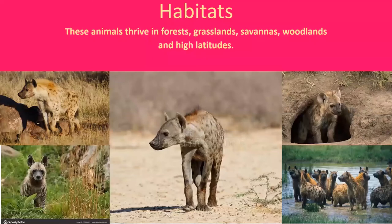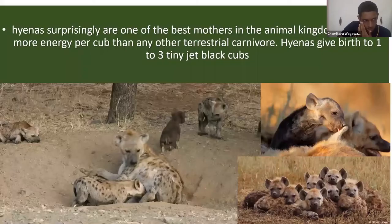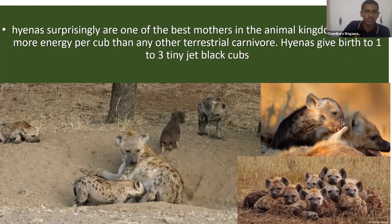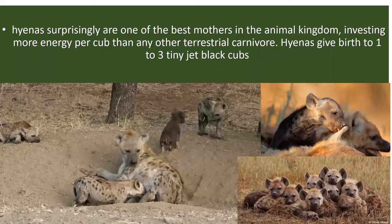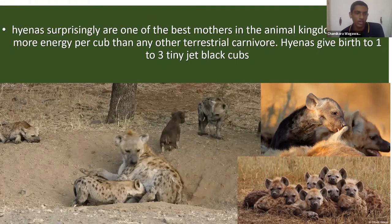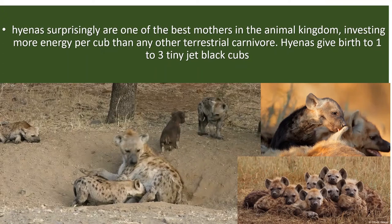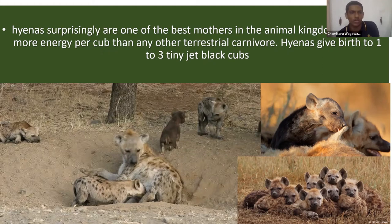This sexual dimorphism can be seen most in spotted hyenas, though in other species the female is also generally bigger. Their cubs are mainly black in color at birth, unlike their mothers. As they get older, spots and markings appear. Hyenas are carnivores — they only eat meat.